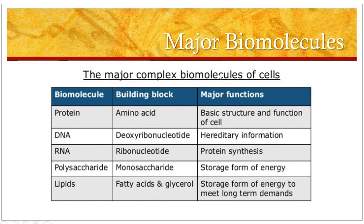So what are the major biomolecules? A cell contains various molecules which are known as biomolecules, and the major complex biomolecules of a cell include proteins, DNA and RNA — that is the nucleic acids — polysaccharides — that is the carbohydrates — and the lipids. Proteins are the biomolecules which are made up of amino acids and they are the basic structural and functional unit of a cell.